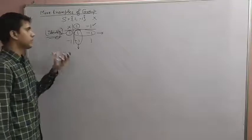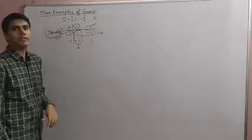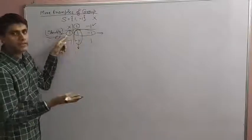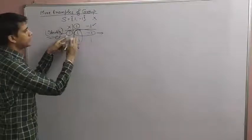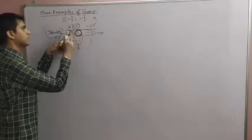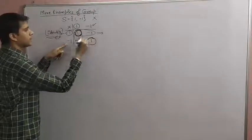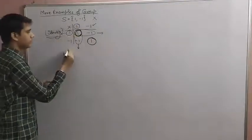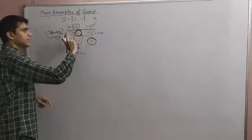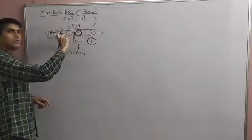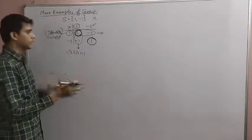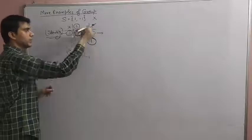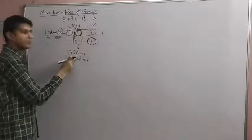Now we talk about inverses. For each element, we need to find what to multiply it by to get the identity, which is 1. Multiplying 1 by 1 gives 1 — so 1 is inverse of itself. Multiplying -1 by -1 gives 1 — so -1 is inverse of itself.